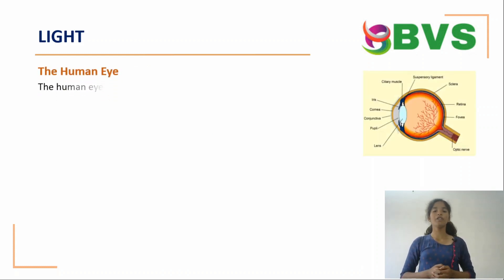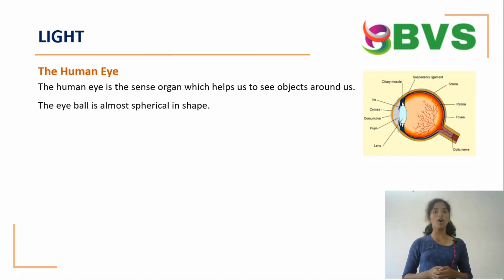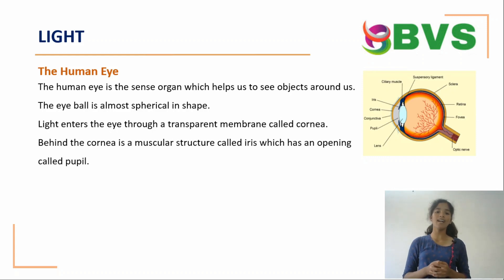The human eye. The human eye is a sense organ which helps us to see objects around us. The eyeball is almost spherical in shape. Light enters the eye through a transparent membrane called cornea. Behind the cornea is a muscular structure called iris which has an opening called pupil. The pupil controls the amount of light entering the eye.